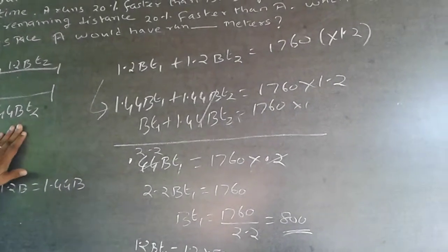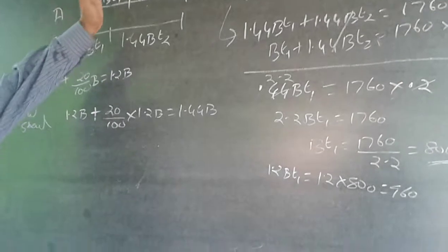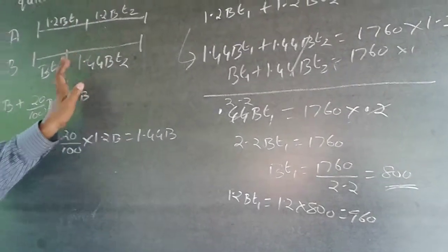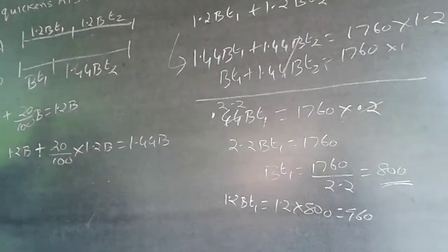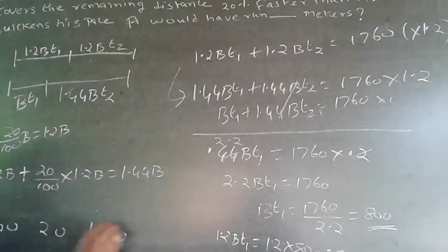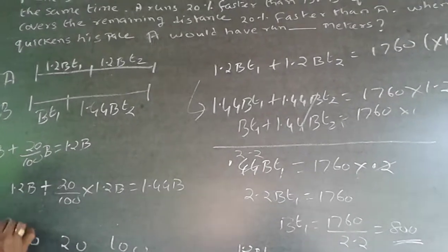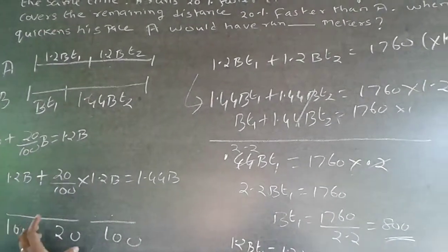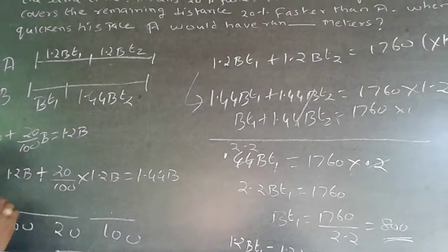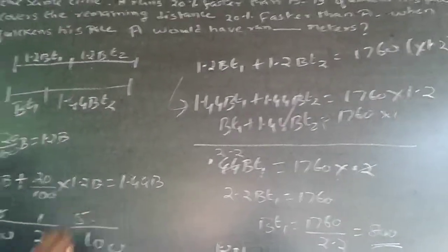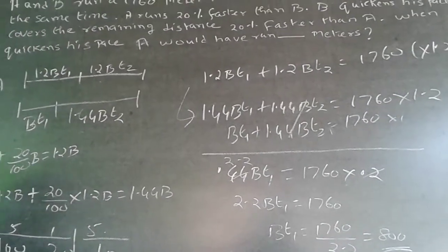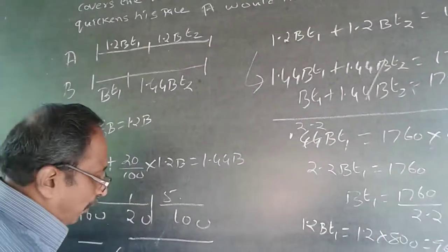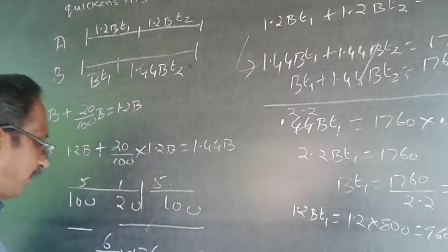The easier way of doing it: once you understand the question, B is moving 100 and A is moving 120 in the first phase. Then B becomes 20% faster than A, so when A moves 100, B moves 120. So you can split the 1760 into the ratio 100 : 20 : 100, which simplifies to 5 : 1 : 5. The answer — the distance run by A — is 6/11 of 1760, which equals 960. This is the shorter way of doing it.